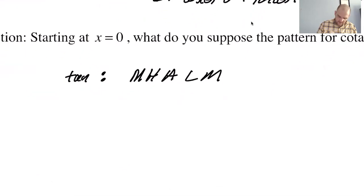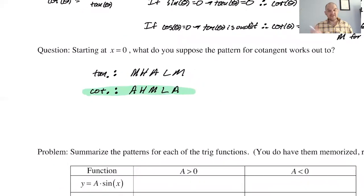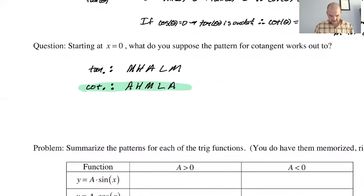Based on what we just said, cotangent should look like asymptote, high, middle, low, asymptote. This is going to be the pattern. This is definitely right. Middle points become asymptotes, high stays high. Asymptote becomes a middle point. Basically the A's and the M's switch, and the highs and lows stay the same. I think that's the easiest way to say it.